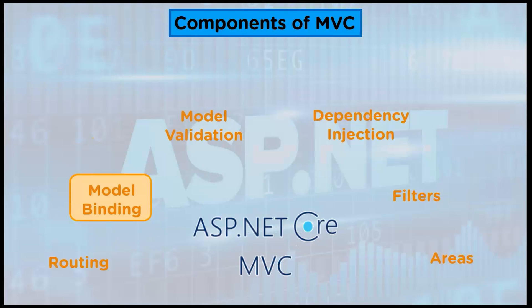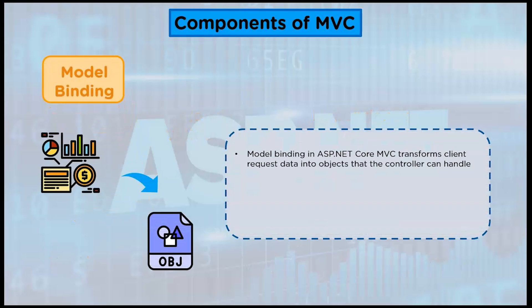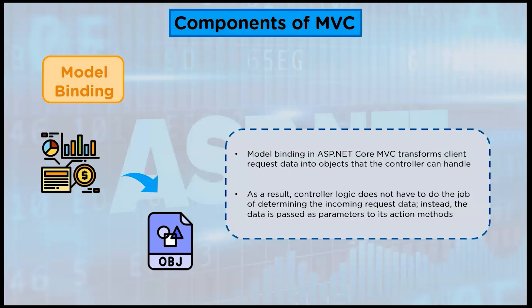Next we have model binding. Model binding in ASP.NET Core MVC transforms client requests — such as form values, route data, query string parameters, and HTTP headers — into objects that the controller can handle. As a result, the controller logic does not have to do the job of determining the incoming request data. Instead, the data is passed as parameters to its action methods.